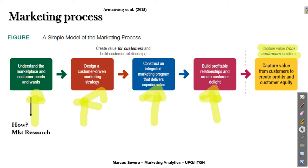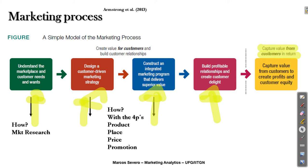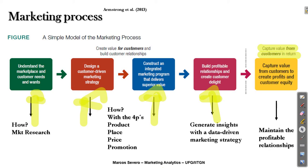The second and third steps refer to designing a marketing strategy and developing an integrated marketing program. When we refer to marketing strategy, we are referring to the four P's of the marketing mix: product, place, price, and promotion decisions. The next step is to build profitable relationships and create customer delight, done using insights with a data-driven marketing strategy. The main output is to capture value from customers.